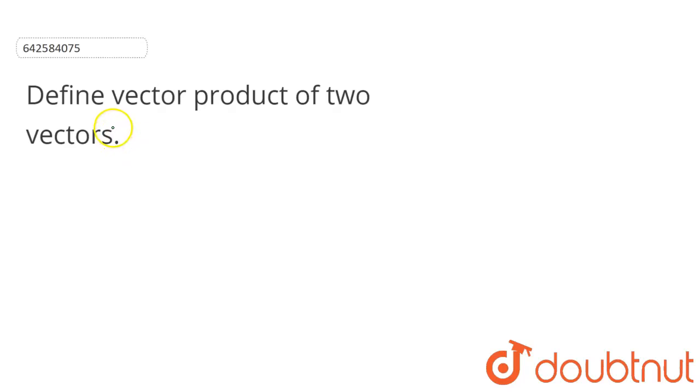Now here we have to define vector product of two vectors. So basically, the vector product is the operation on two vectors. There are two types of vector product: dot product and second will be cross product.